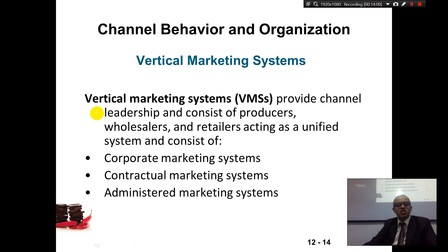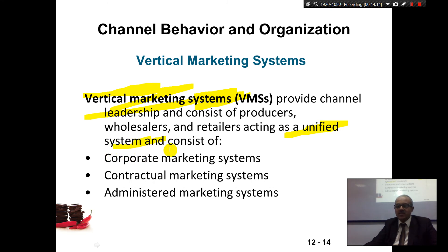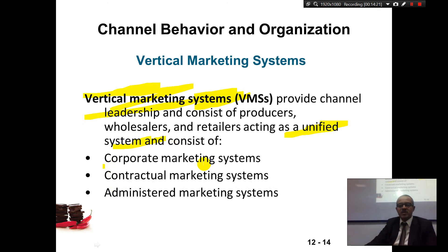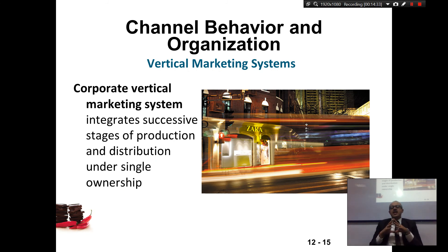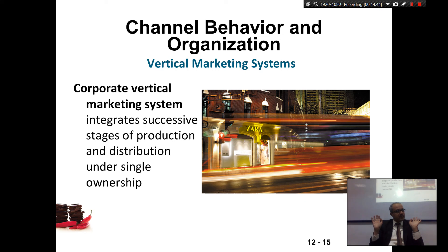So companies decided to implement a vertical marketing system — providing channel leadership where producers, wholesalers, and retailers act as a unified system. They use corporate, contractual, and administrative approaches. An example of the corporate approach: Zara decided they don't want distributors. Every single Zara store in the world is owned by Zara — they make their own stores, hire their own people, manage their own inventory, and all systems are in place.